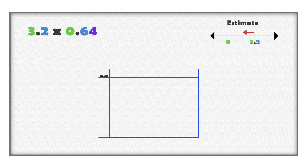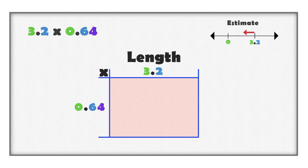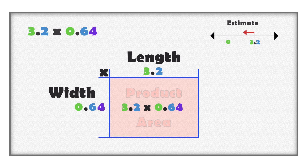We can use an array model to organize our numbers. An array model helps us think about multiplication as an area. In an area model, we think of one of the values as a length and the other value as a width. When the length and width are multiplied together, the product is the total area.